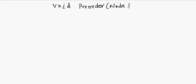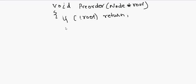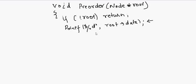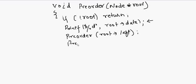The recursive implementation of pre-order traversal is very simple. It's a function called void pre-order with root passed as a parameter. If root is null, we return. Otherwise, we print root's data first — that is pre-order, meaning we process the root first — then apply the same procedure on root's left child, and the same procedure on root's right child.